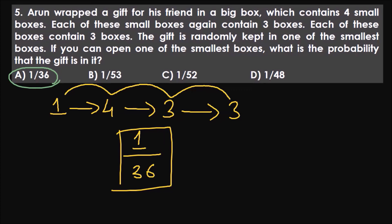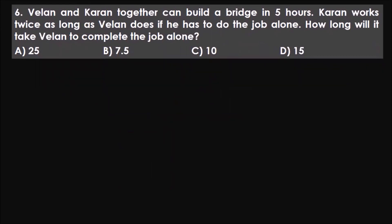Let's move on. Pause the video and try to solve it. The answer is B, 7.5. Vilan and Karan together can build a bridge in five hours. When it comes to time and work, we work with efficiencies. Efficiency of Vilan plus efficiency of Karan equals one by five, since one full bridge is built in five hours. Karan works twice as long as Vilan alone, meaning Karan is slower and Vilan's efficiency is twice Karan's.